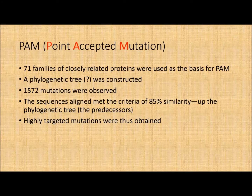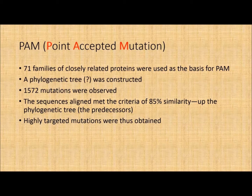Now let's turn to PAM — Point Accepted Mutation. In a PAM matrix, 71 families of closely related proteins were used as a basis. A phylogenetic tree is constructed from these families — we'll discuss cladistics and phylogenetic analysis in a later module. Basically, you do a many-to-many comparison, matching sequences and organizing them so that the most closely related sequences in terms of identities and similarities cluster together.